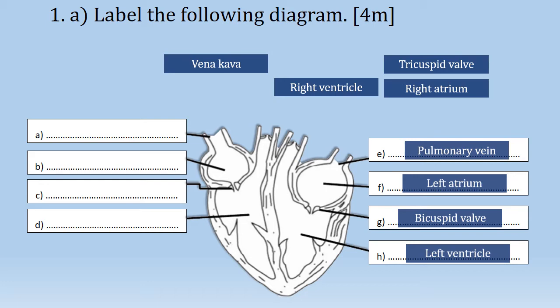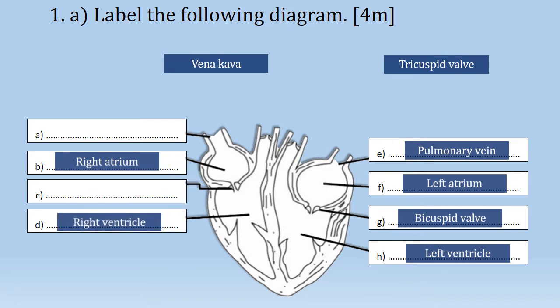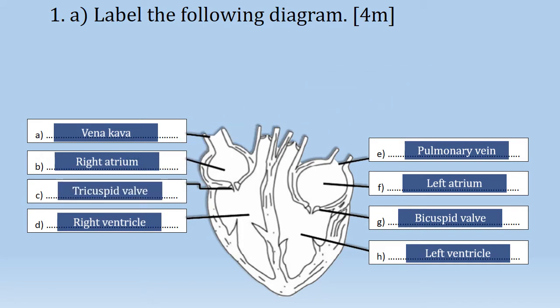Next, we go to the right part of the heart, which transports the deoxygenated blood — blood without oxygen. The upper chamber is the right atrium, meanwhile the lower chamber is the right ventricle. This is the vena cava, where the deoxygenated blood enters the right atrium through it. Between the right atrium and the right ventricle is the tricuspid valve, to allow blood to flow only in one direction.